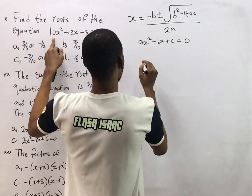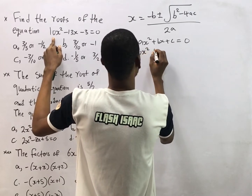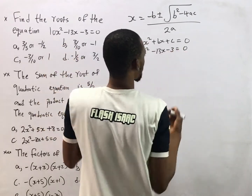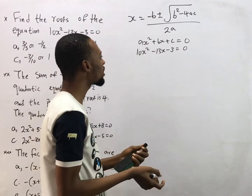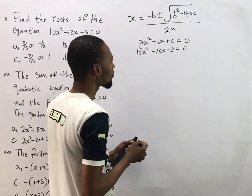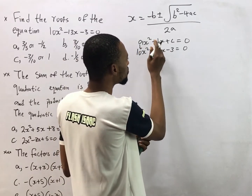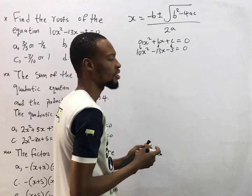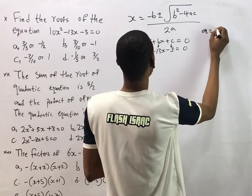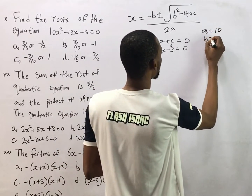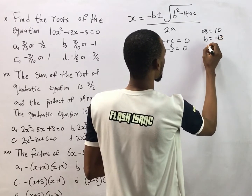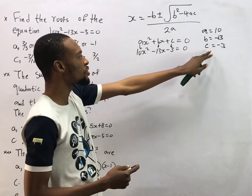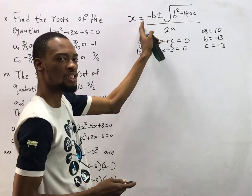Given the equation 10s squared minus 13s minus 3 equals zero, if you compare it to the standard form, you agree that a equals 10, b equals negative 13, and c equals negative 3. So therefore a is 10, b is negative 13, and c is negative 3. We've identified what we need, so let's substitute these values into the quadratic formula.